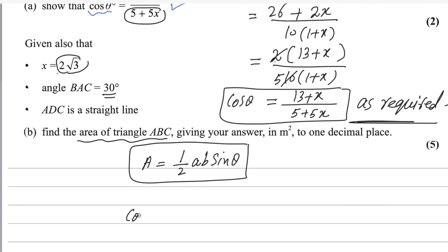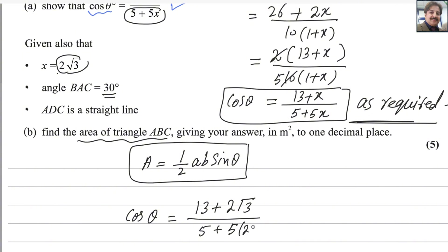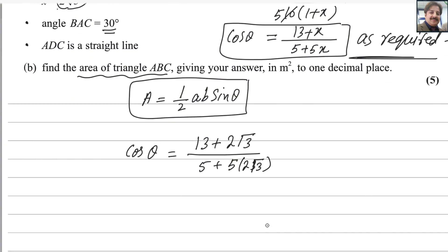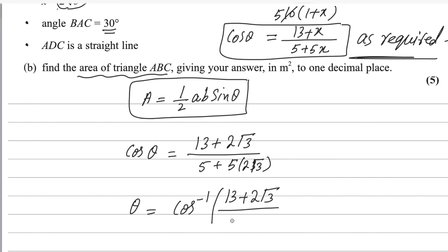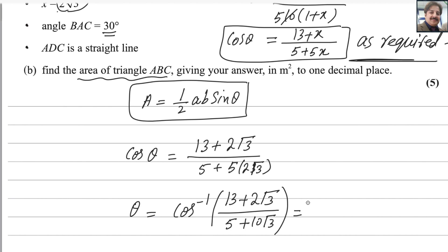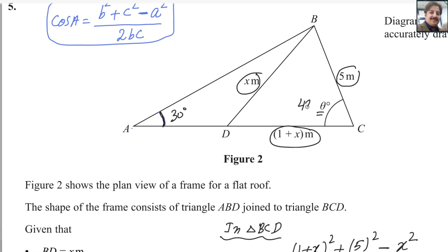Let me find the value of theta by substituting x equals 2√3 into cosine theta equals (13 plus x) over (5 plus 5x). So cosine theta equals (13 plus 2√3) divided by (5 plus 5 times 2√3), which is (13 plus 2√3) over (5 plus 10√3). To find theta, take the inverse cosine. Make sure your calculator is in degree mode. Solving gives theta equals 42.5 degrees.